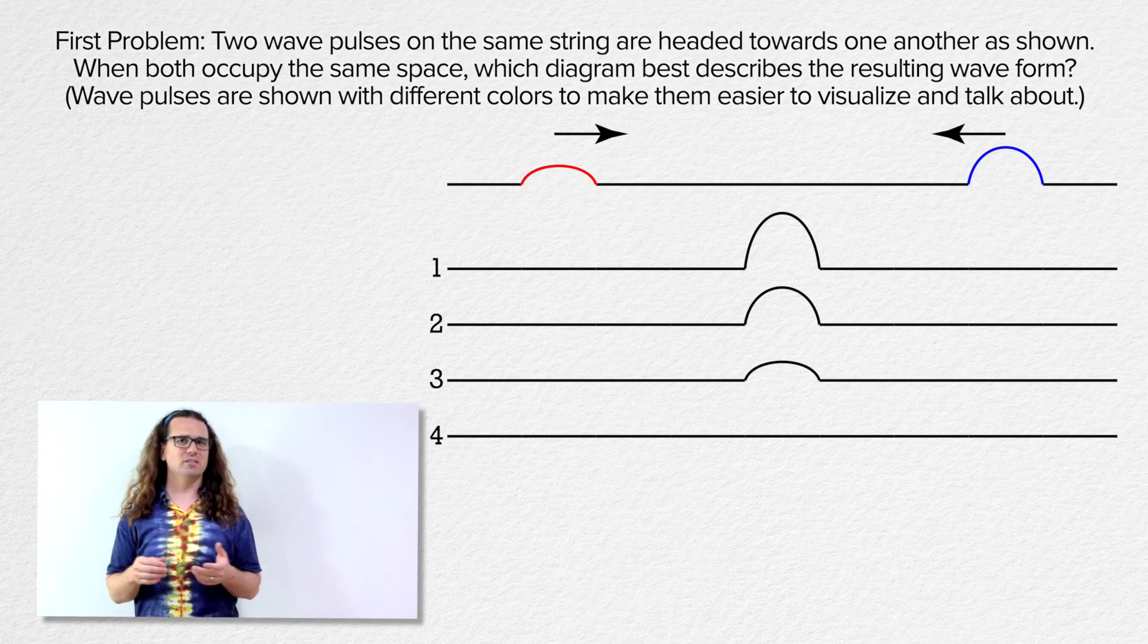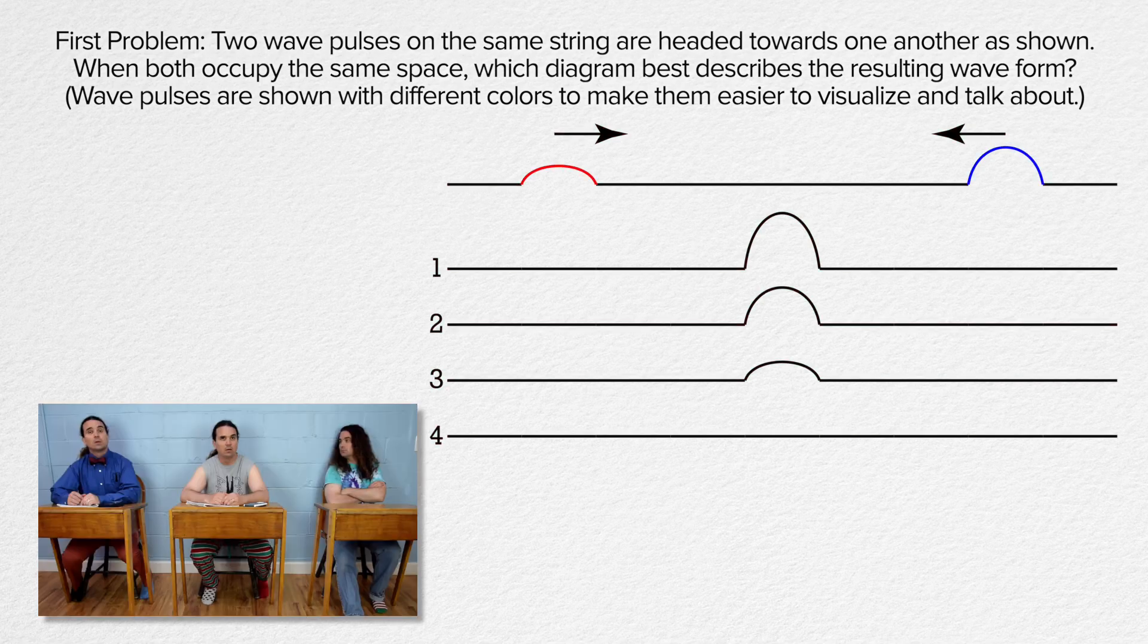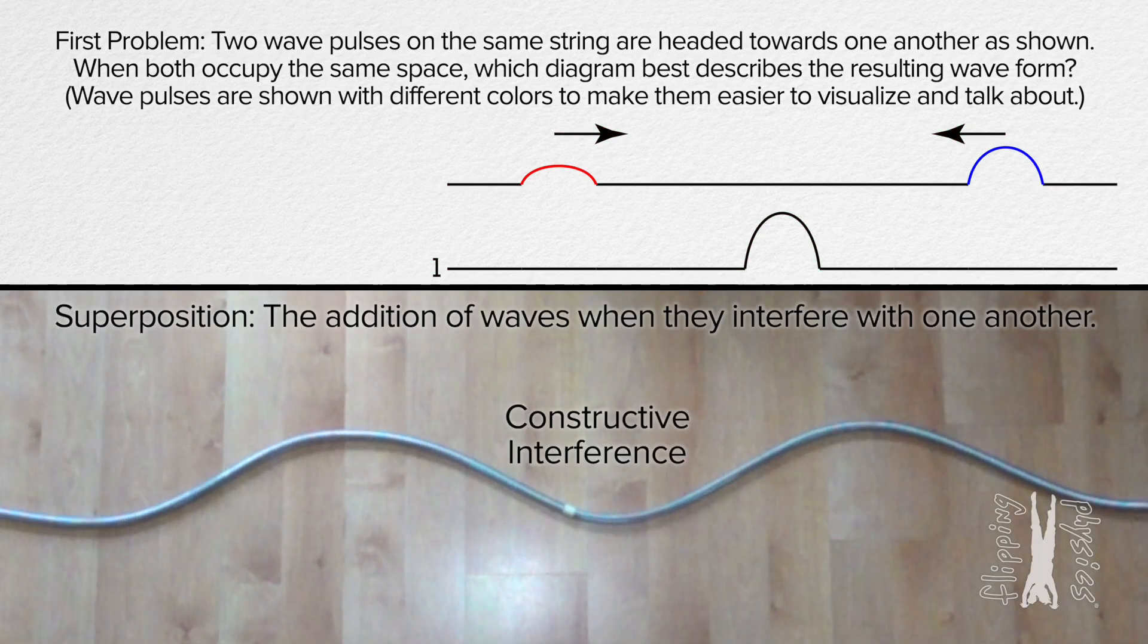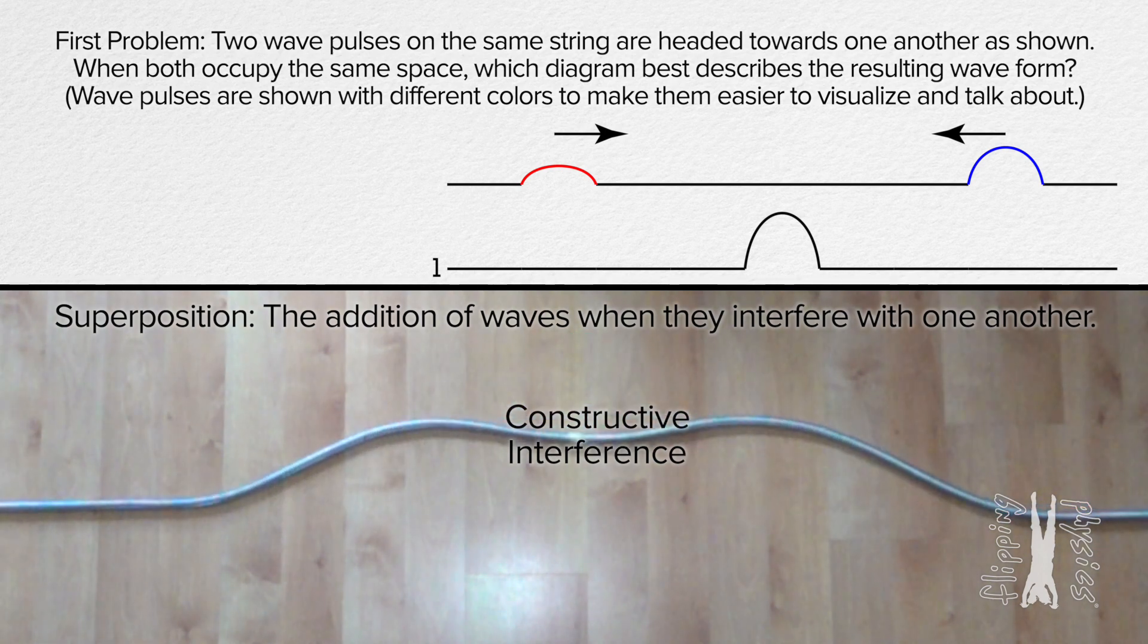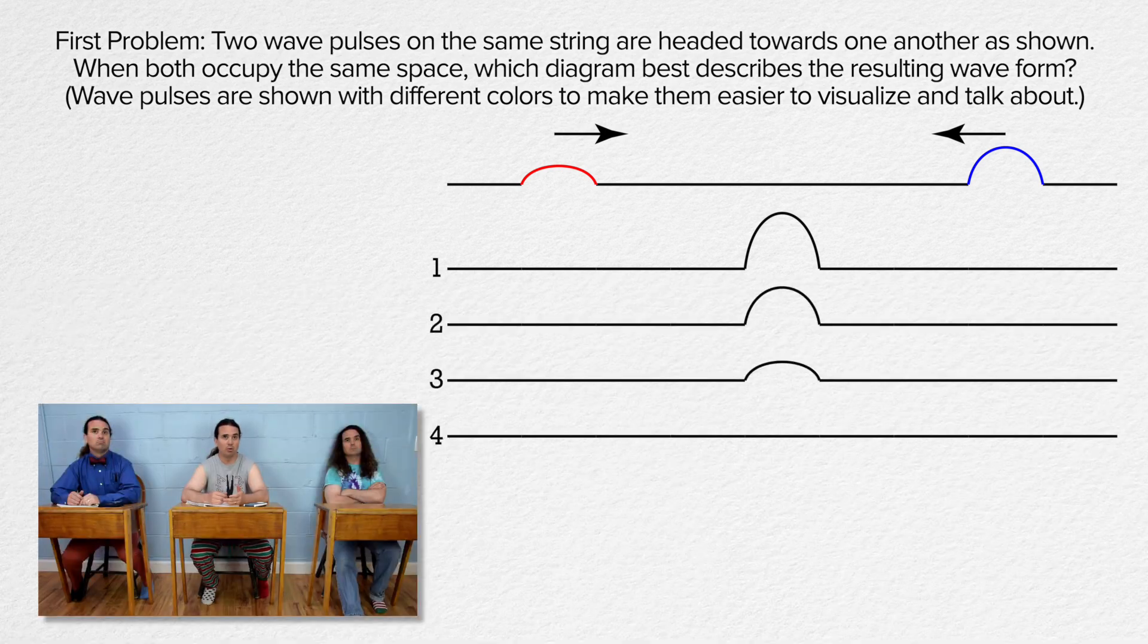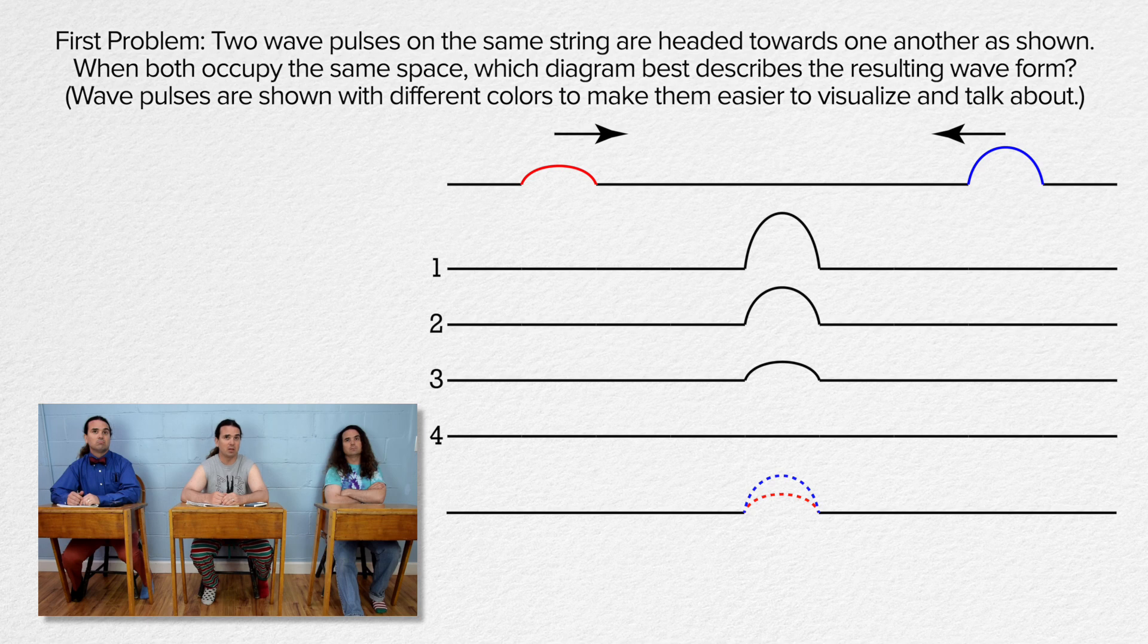Yeah, if I made the whole illustration black, it would be more difficult to discuss and visualize what happens. Bobby? Okay, well, this is just interference via superposition like we did last time and you just demonstrated. So, we draw both the red and blue waves in the middle at the same position and add their amplitudes together. The correct answer then has to be number one.